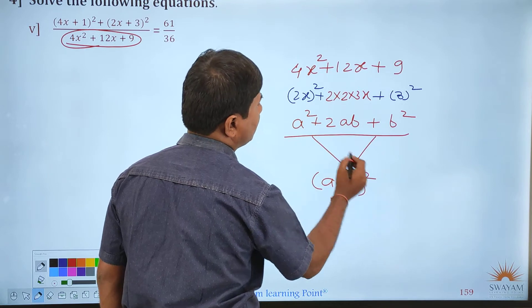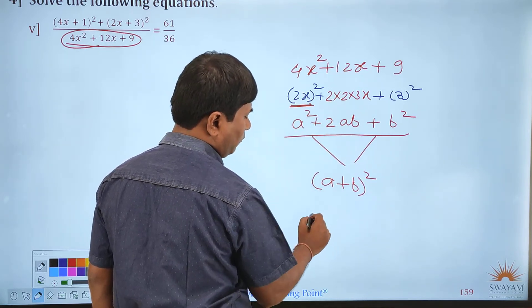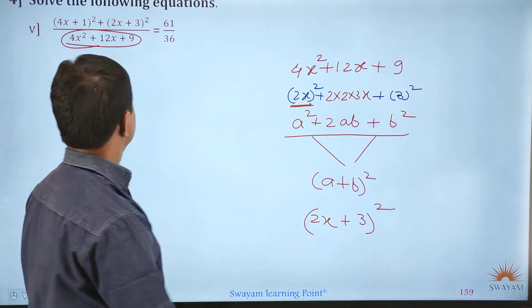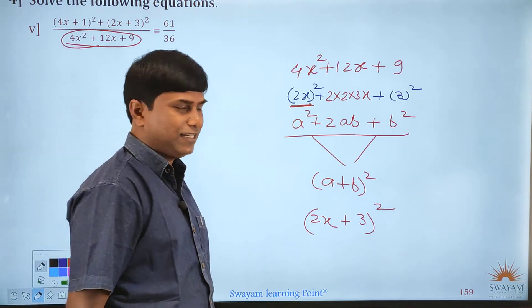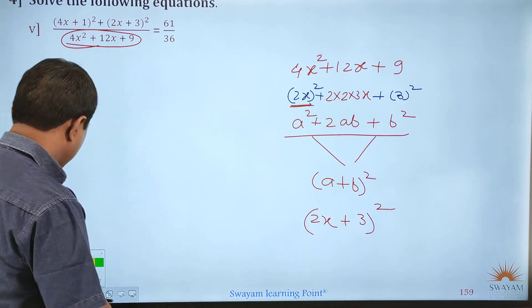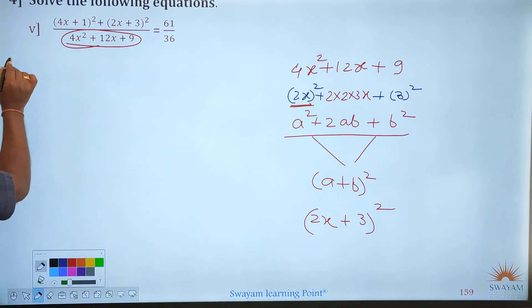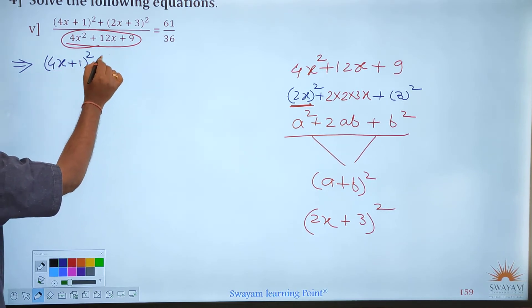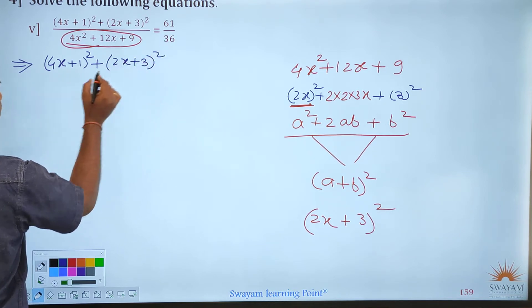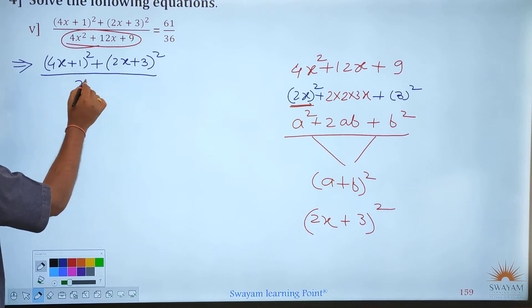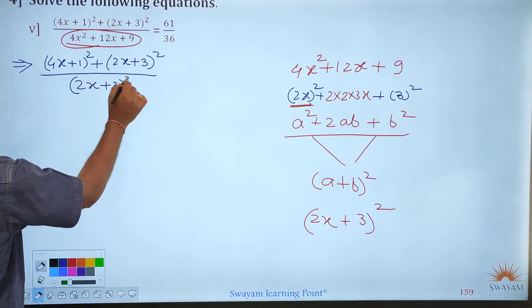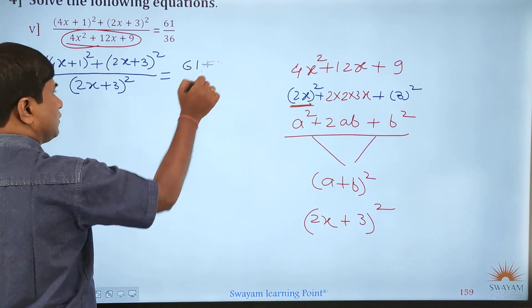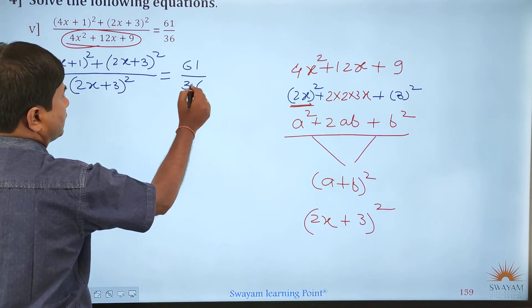This is the (a + b)² pattern, where a is 2x and b is 3. So we can write: (4x+1)² plus (2x+3)² divided by (2x+3)² is equal to 61 divided by 36.